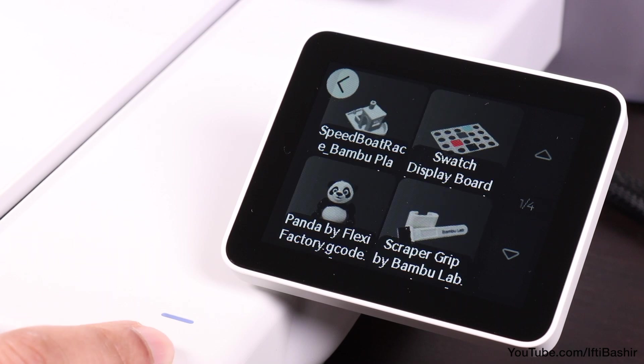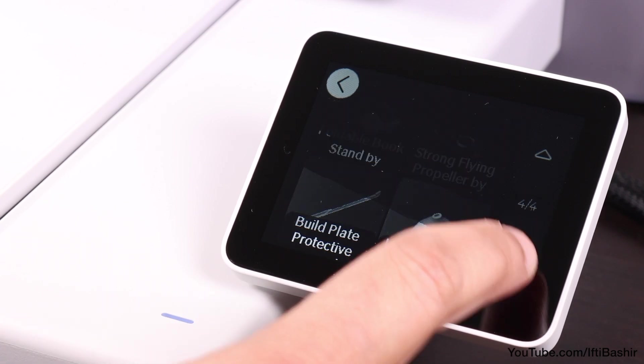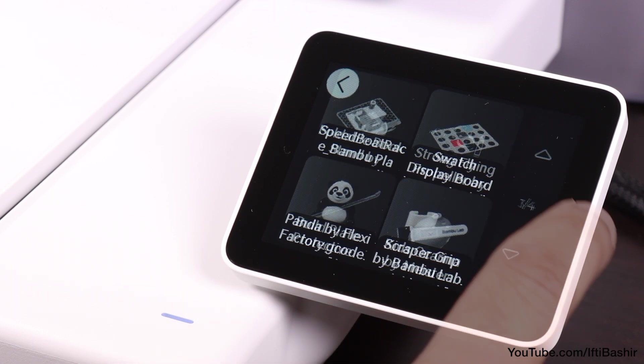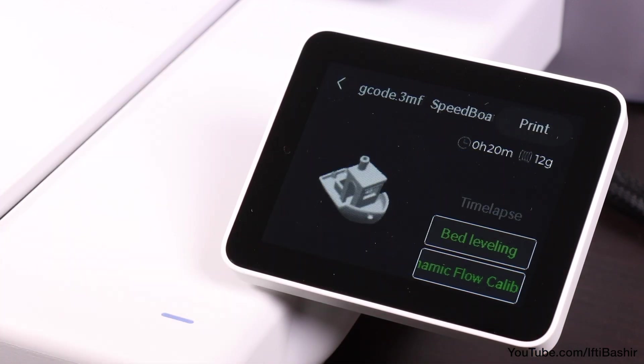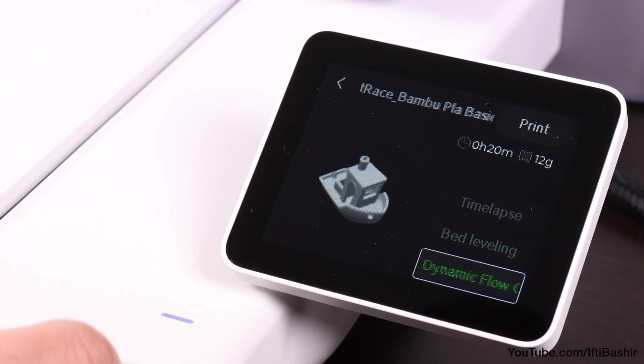Okay, so we'll go ahead with our first print now then. I generally always start with a benchy considering if you get a successful result here you'll know the printer is pretty much dialed in and ready to go. So we'll go with that. And skip bed leveling considering we've just completed a full calibration anyways.